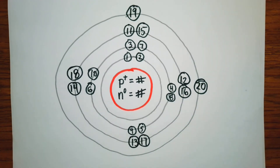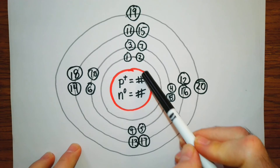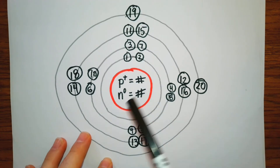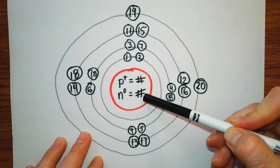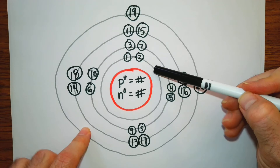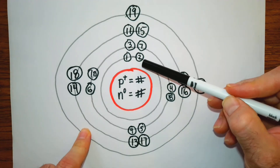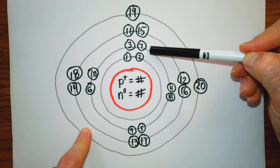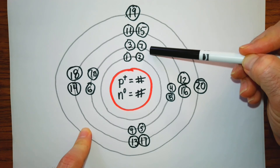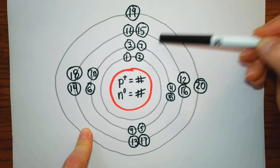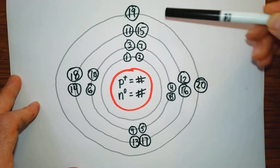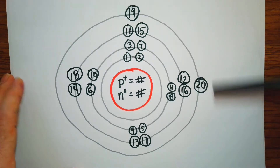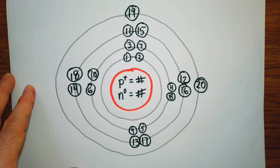Let's recap: draw a circle that illustrates the nucleus, put P equals the number of protons and N equals the number of neutrons. For the first orbital, maximum of two. Second orbital, maximum of eight. Third orbital, maximum of eight. Fourth orbital, we only draw two. After this it gets more complicated, so we draw our Bohr models like this.